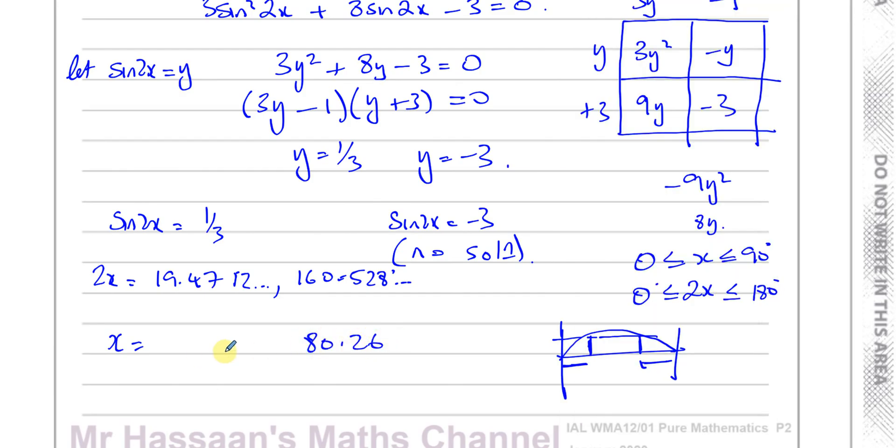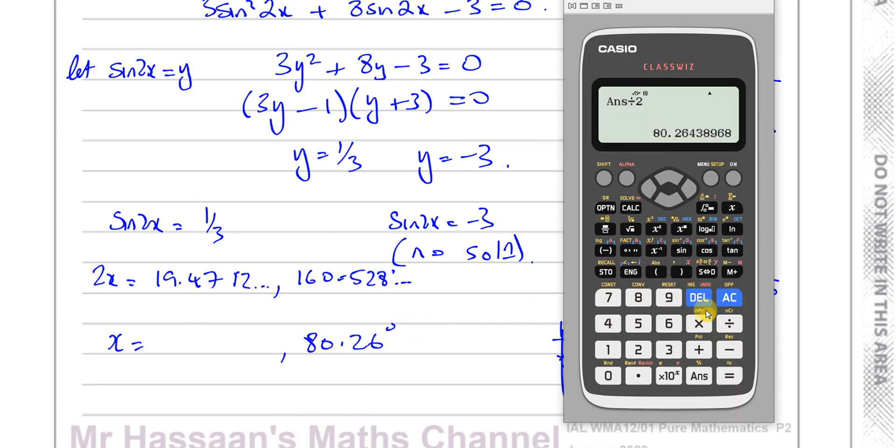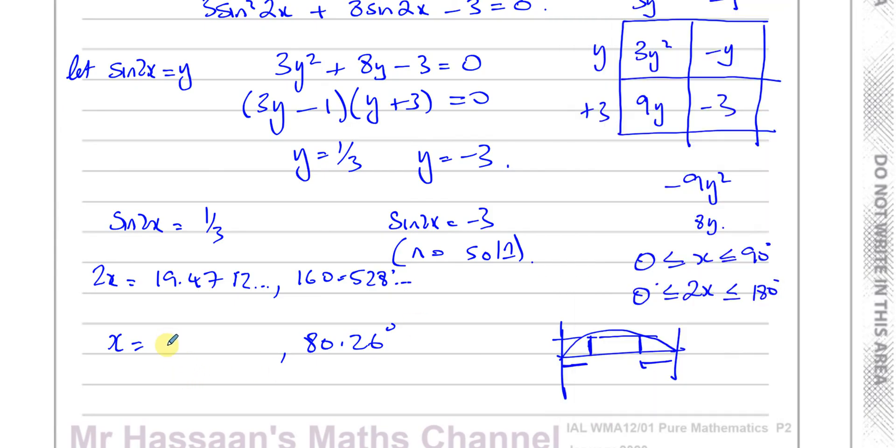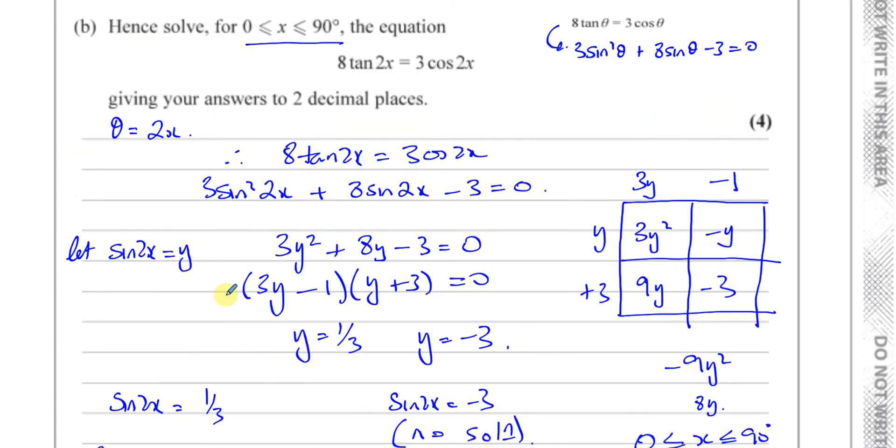And this angle, which was 19.4712, divided by 2, which gives me 9.74, 9.74 to two decimal places, and there we have the two angles, which are the solutions to this equation.